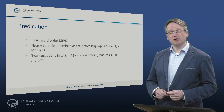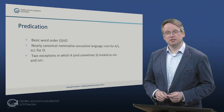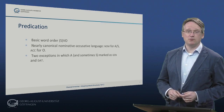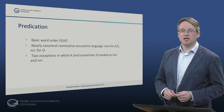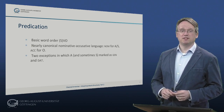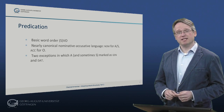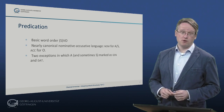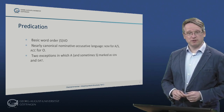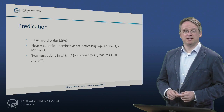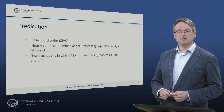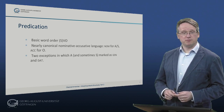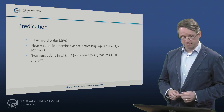As a nearly canonical nominative-accusative language with basic SVO word order, Armenian uses the nominative to mark A and S and the accusative to mark O. But there are two constructions which deviate from this pattern in that they use the genitive and the dative respectively to mark the subject.